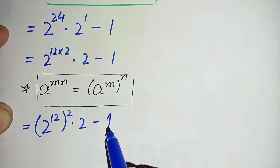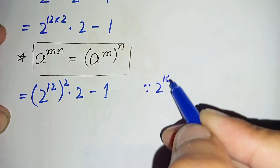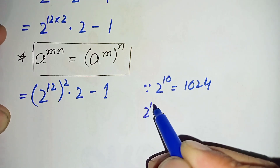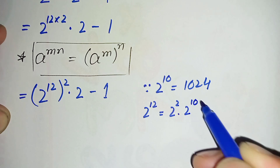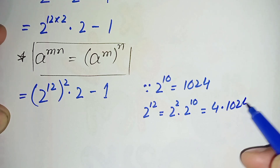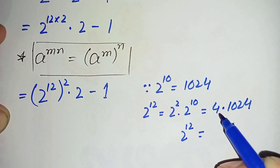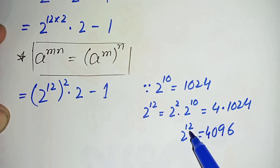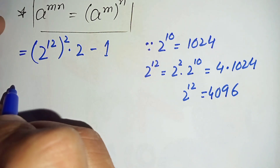Now we know that 2 raised to power 10 is the famous number 1024. The value of 2 raised to power 12 will be 2 raised to power 2 times 2 raised to power 10, which is 4 times 1024. Multiplying: 4 times 1024 gives 4096. So the value of 2 raised to power 12 is 4096. We will replace 2 raised to power 12 with 4096.